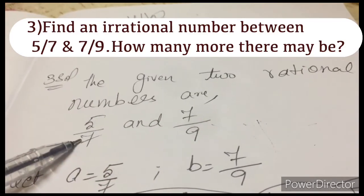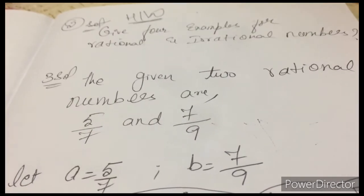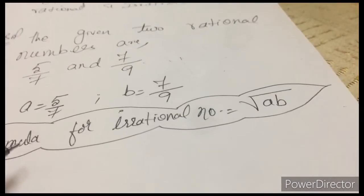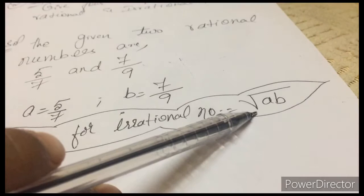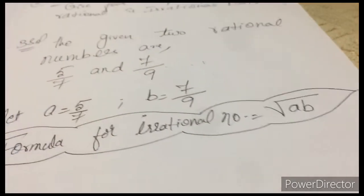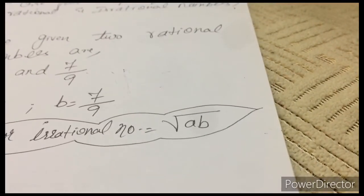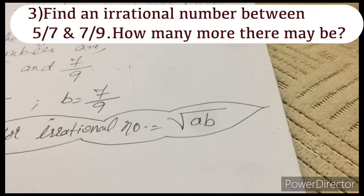So you know first number is always a, second number is b. So the formula for irrational number is root ab. This is the formula. So first is a, second is b.